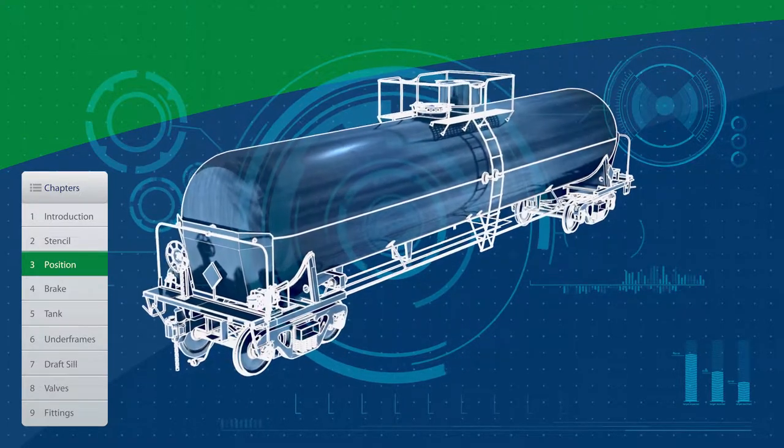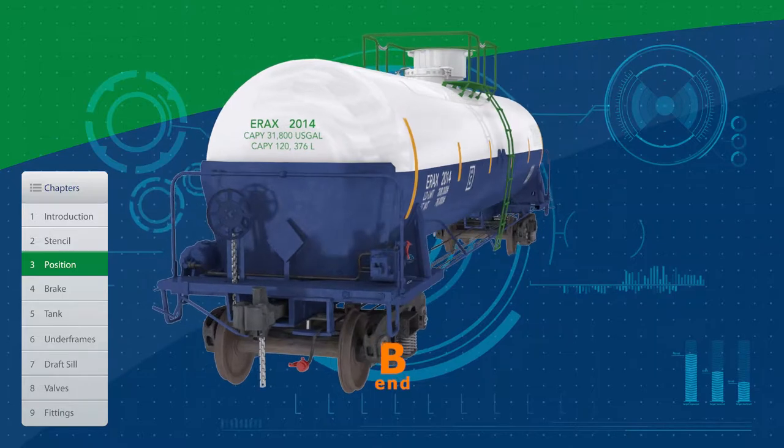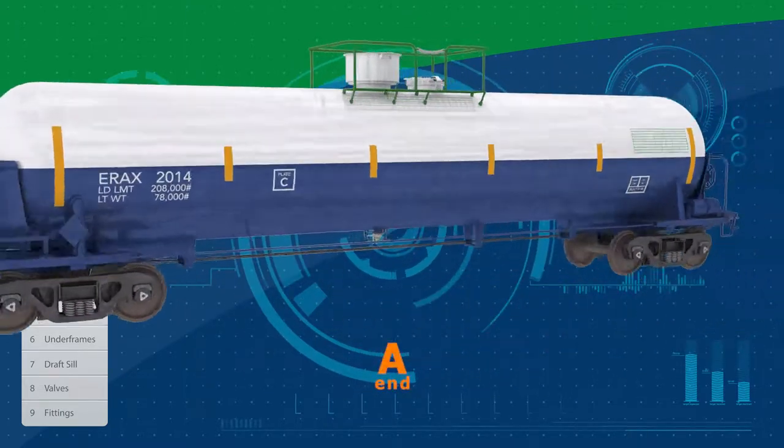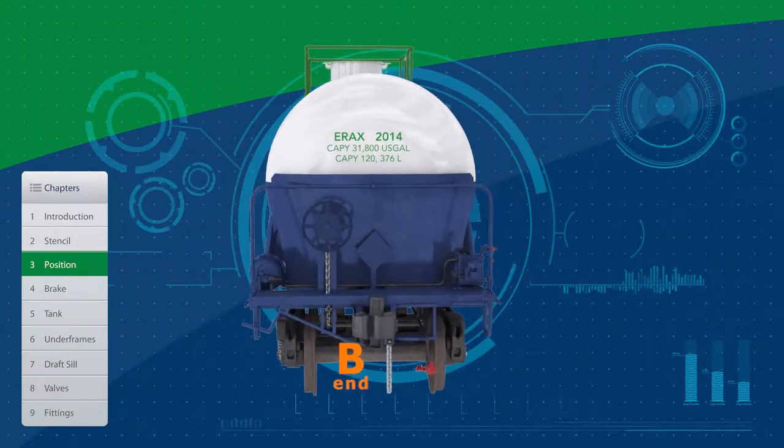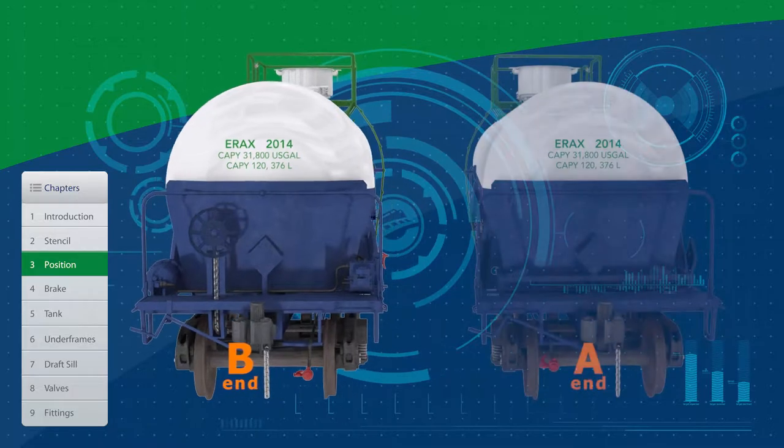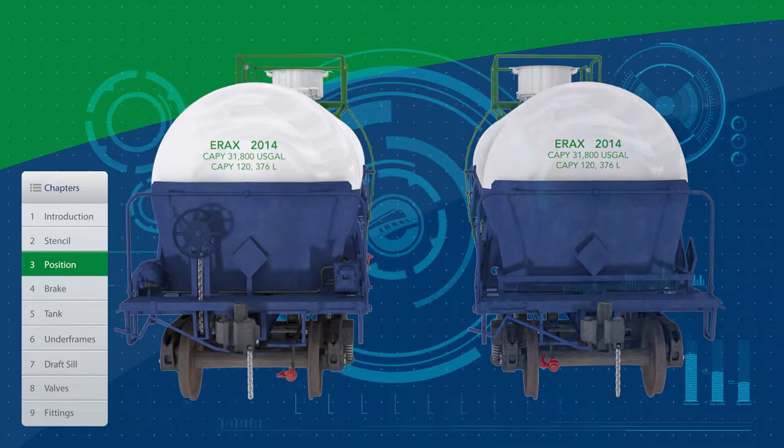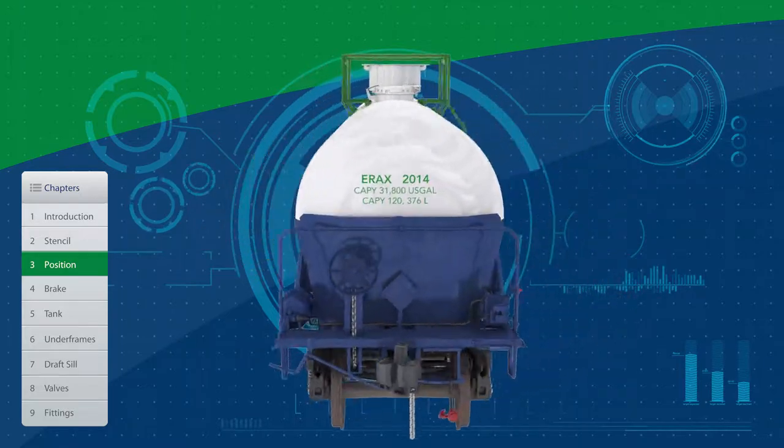When referring to position on a tank car, everything is oriented from the B end. The B end is always the end where the handbrake is attached. The A end is on the opposite end. When looking from the B end towards the A end, the left side is on the left and the right side is on the right. The orientation is reversed if looking from the A end towards the B end. Therefore, left side from the B end is the same side as the right side from the A end.